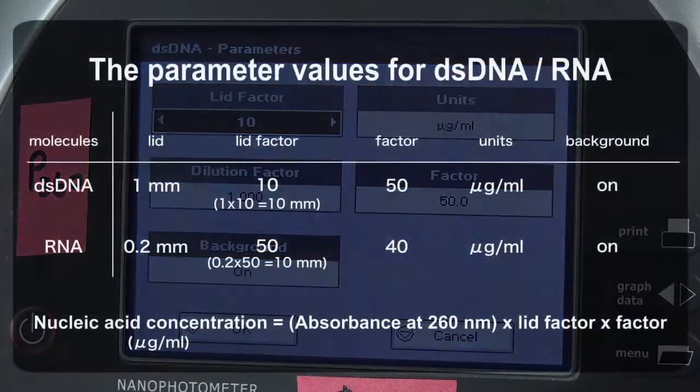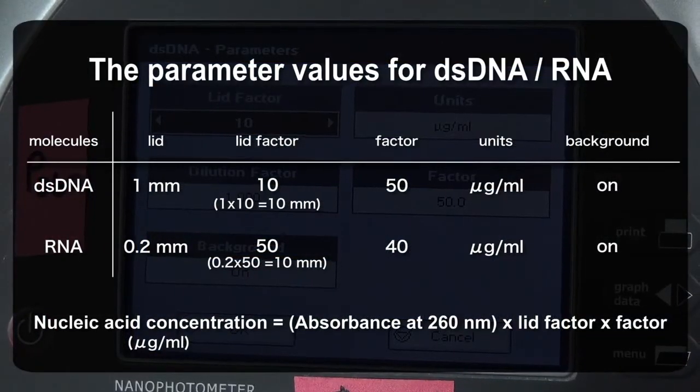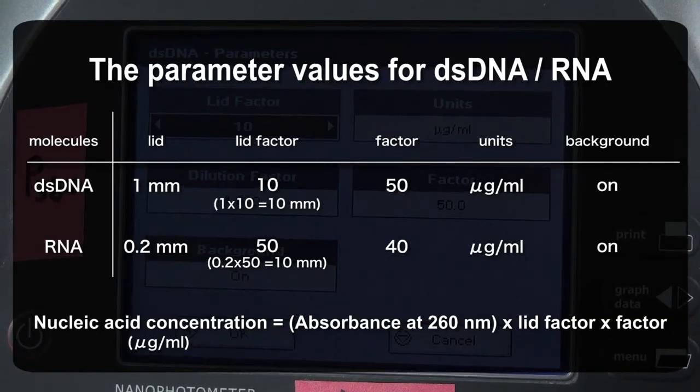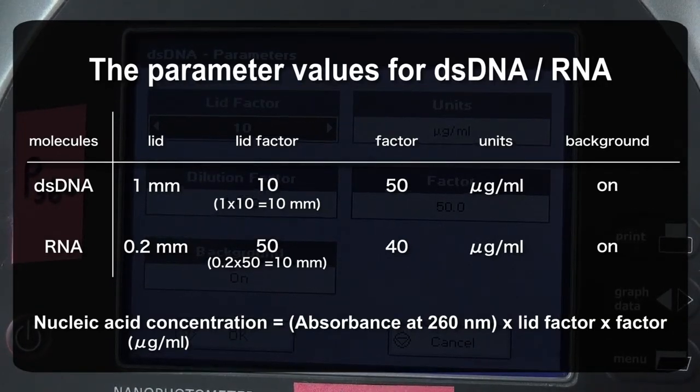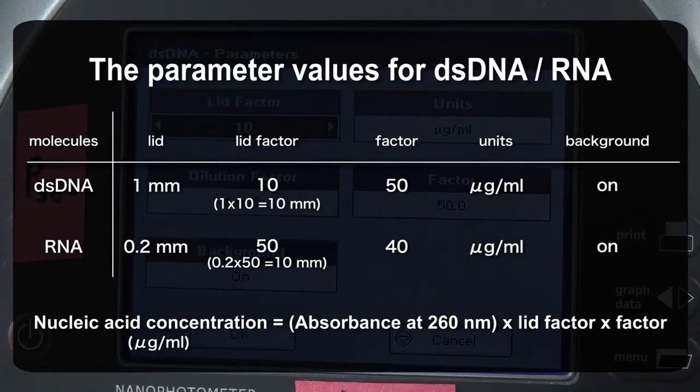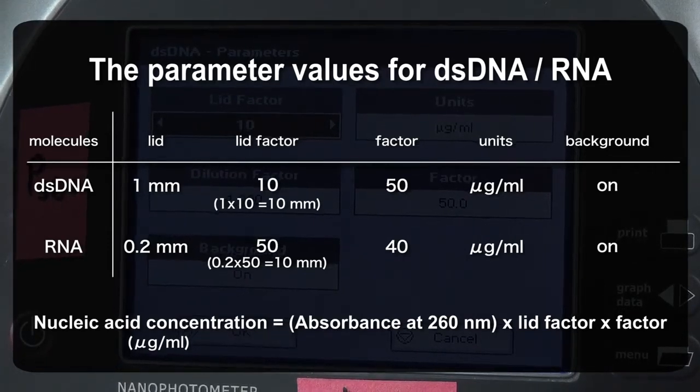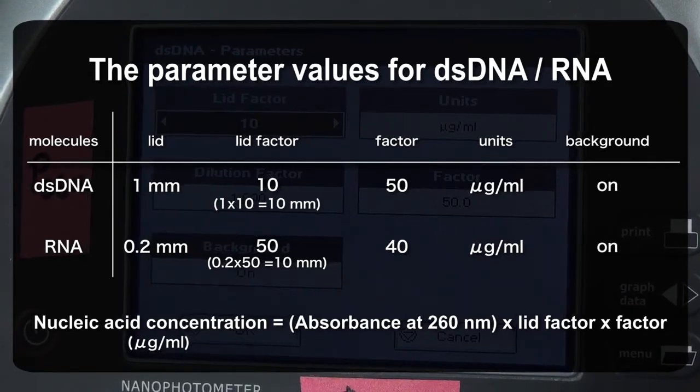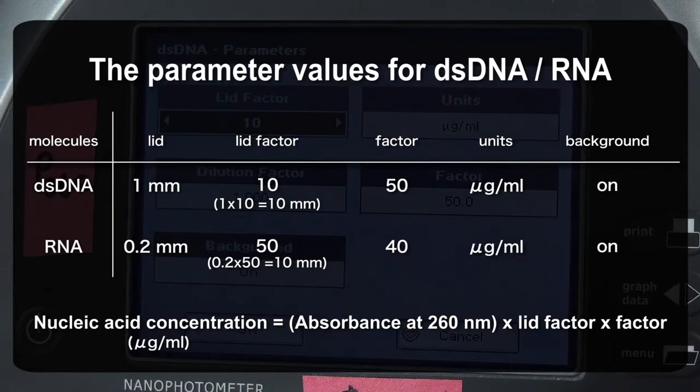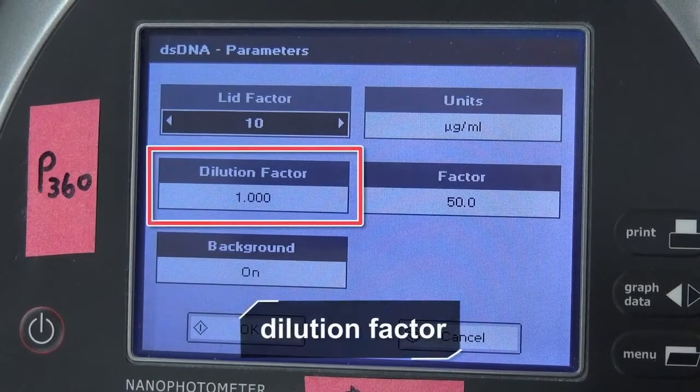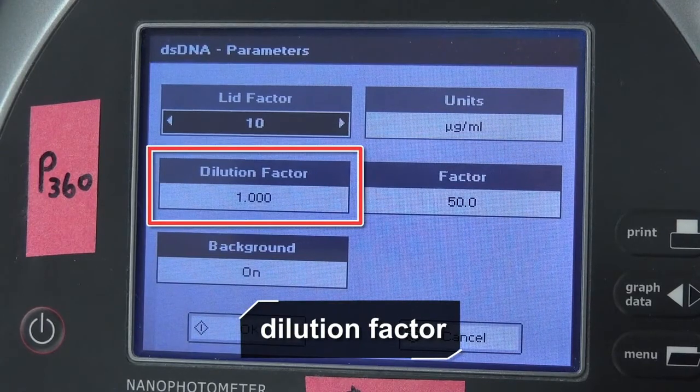The table lists the parameter values for double-stranded DNA and RNA, and the nucleic acid concentration is calculated from the measured absorbance. Nucleic acid concentration, µg per milliliter, is the product of absorbance at 260 nm and lid factor and factor. Since the sample isn't diluted, the dilution factor remains as 1.000.